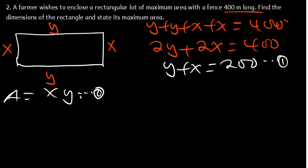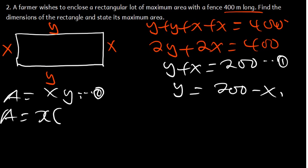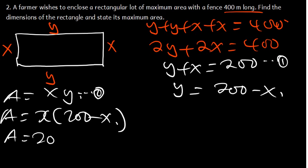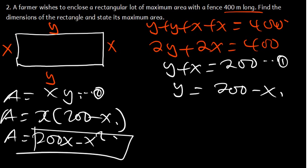From equation 1, let's make Y the subject of the formula: Y = 200 minus X. Now I substitute this Y into the area equation. So area equals X times open bracket 200 minus X, and distributing X gives us A = 200X minus X squared.